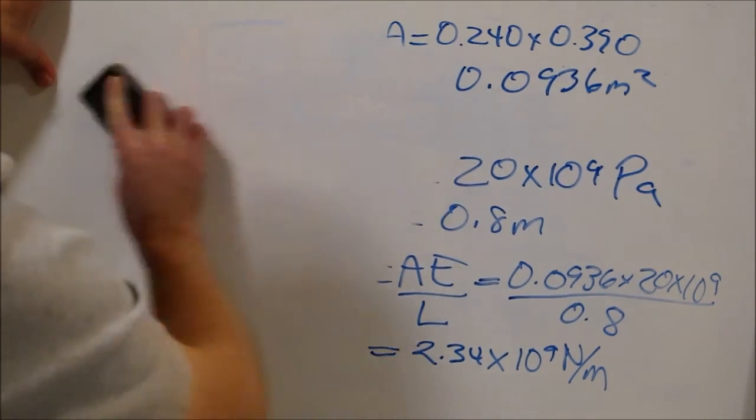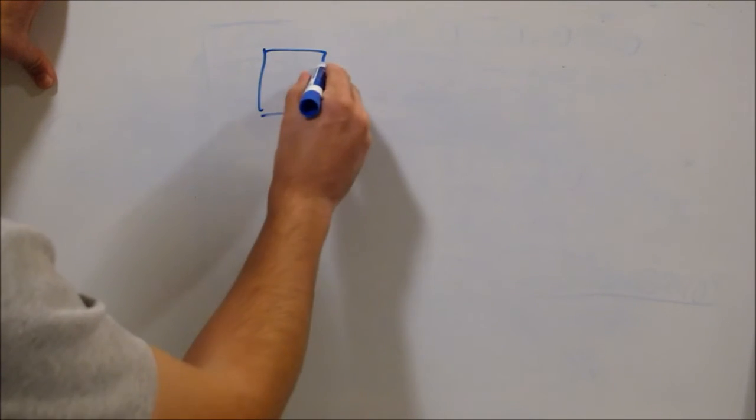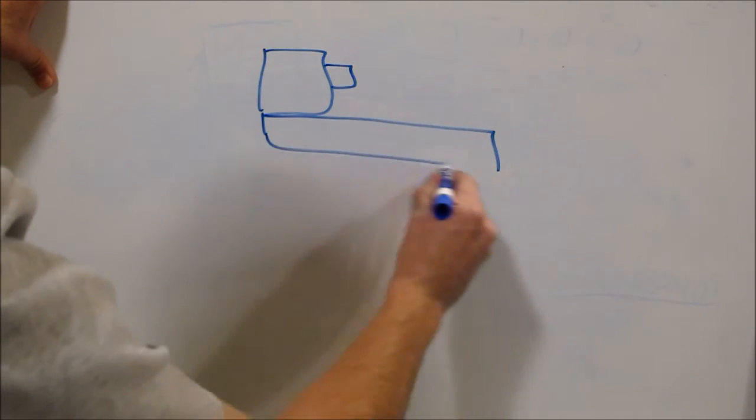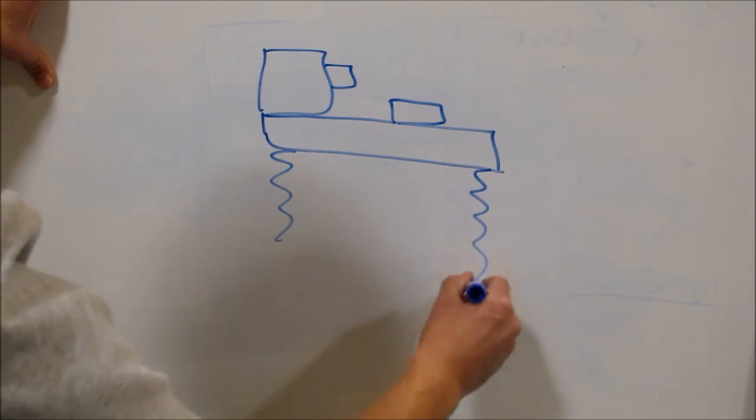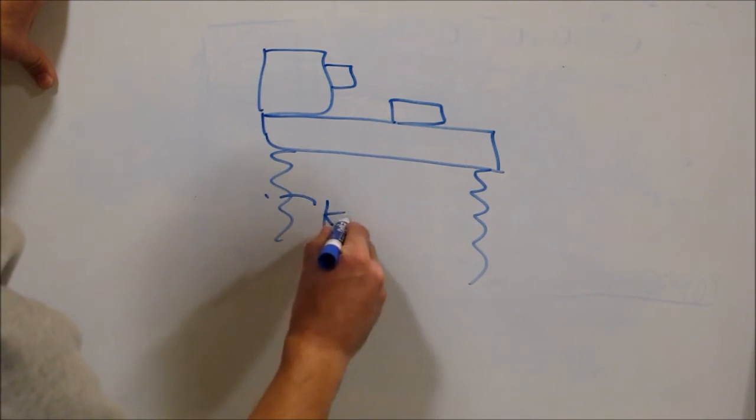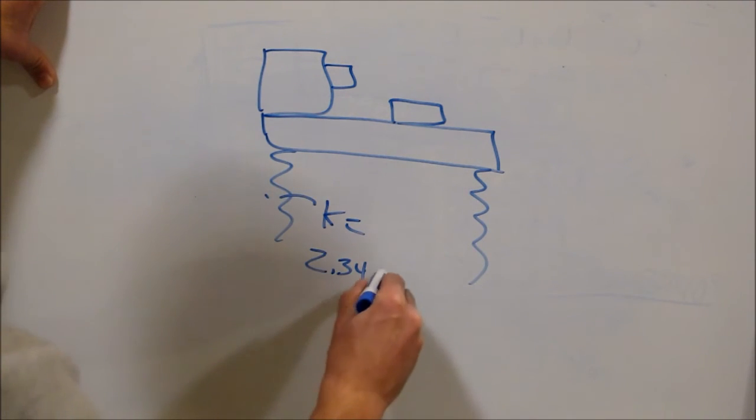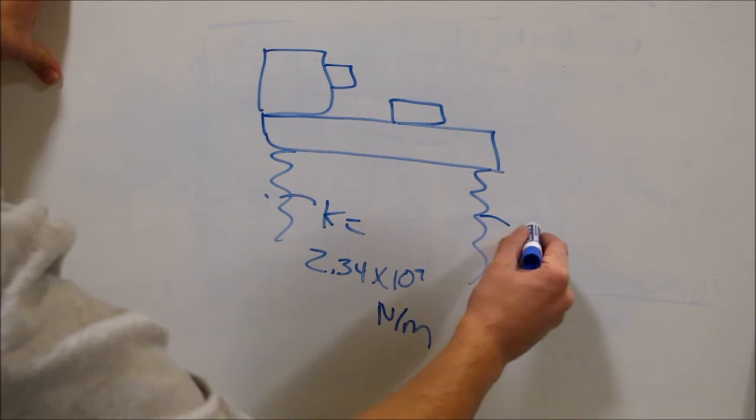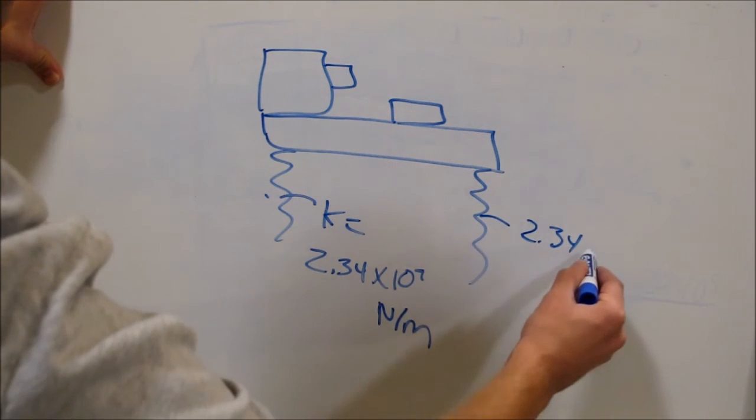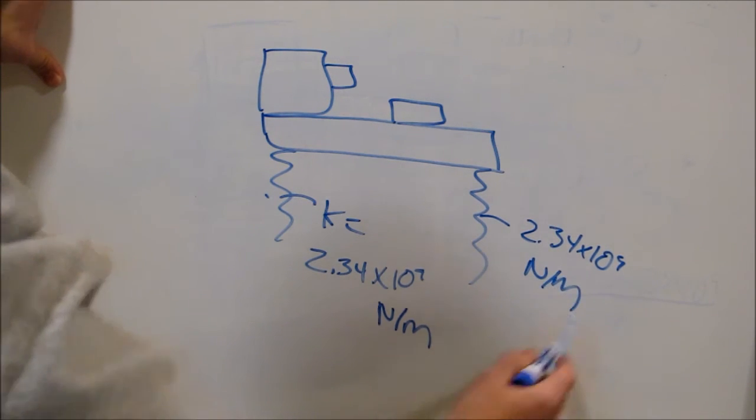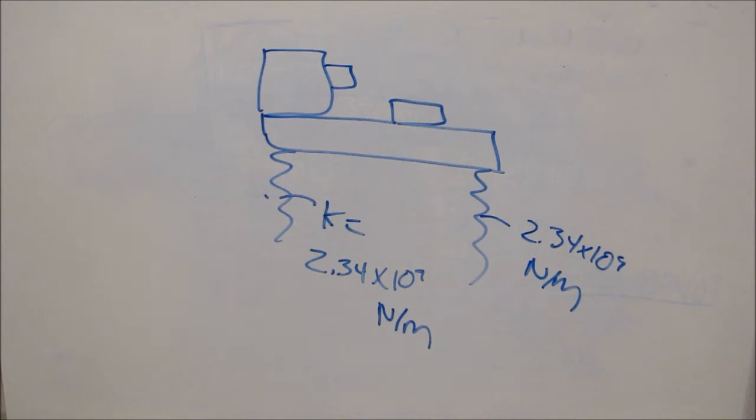And when you do all that, you get 0.0936 times 20 times 10 to the 9 all over 0.8. And that is equal to one very, very big number, or 2.34 times 10 to the 9 newtons per meter. So going back to the lathe, now that we got that figured out, so we have our lathe. It's sitting on two springs with a K value 2.34 times 10 to the 9 newtons per meter. So that's the concrete stiffness.